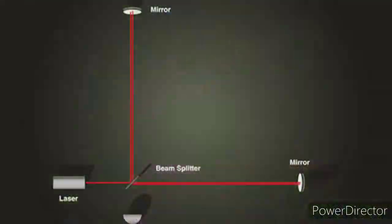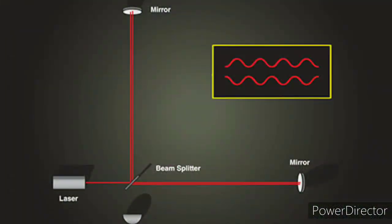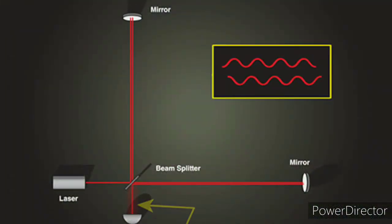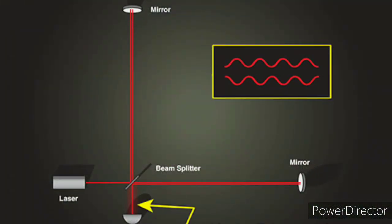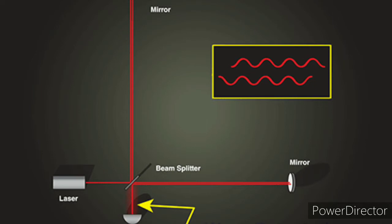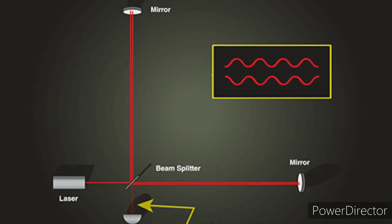In fact, this idea was used to make the first ever detection. As the gravitational wave passed through LIGO's arm, it stretched it apart and brought it closer. This resulted in the first detection of a gravitational wave.